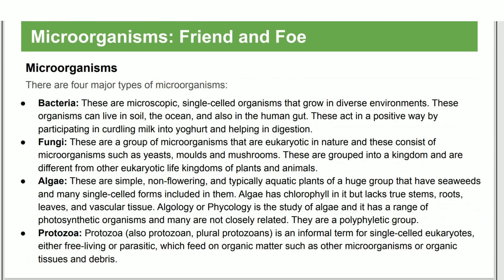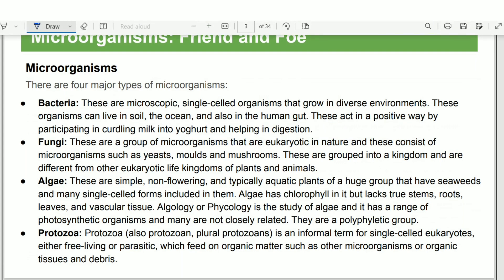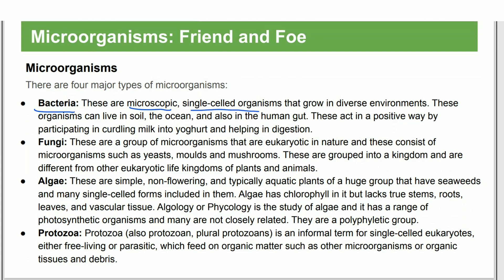The major types of microorganisms include bacteria, fungi, algae, and protozoa. Protozoa are microscopic single-celled organisms that can live in different kinds of environments — they can live in soil and oceans.